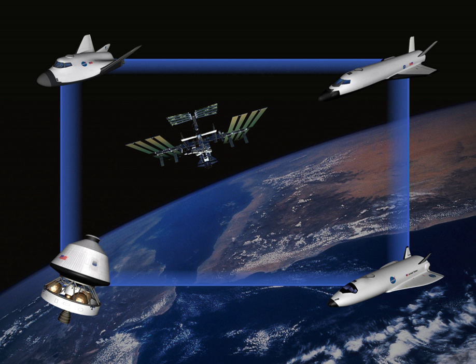Future versions of the Orbital Space Plane would have been launched on an existing Evolved Expendable Launch Vehicle rocket to carry crews to the International Space Station. It was envisaged that the OSP would operate alongside the Space Shuttle, with the OSP responsible for crew flights and the Shuttle handling construction and cargo flights. At the time, the Shuttle program was not yet set for retirement and was thought to be technically viable up until the 2030s.